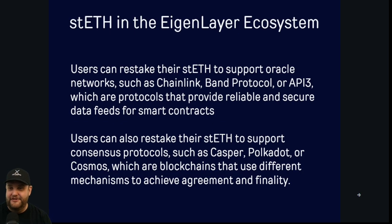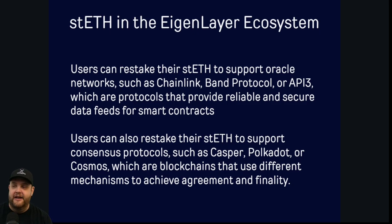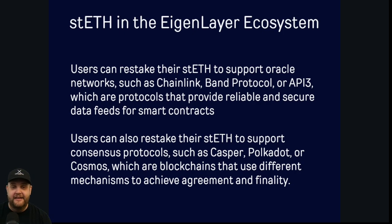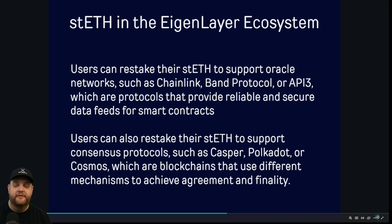Not only does it work with layer twos — users can restake their ETH to support Oracle networks such as Chainlink, Band Protocol, and API3, which provide reliable and secure data feeds for smart contracts. You can also restake STETH to support consensus protocols like Casper, Polkadot, or Cosmos — blockchains that use different mechanisms to achieve agreement and finality. They can utilize the Ethereum security layer to keep their network safe by leveraging Eigenlayer.